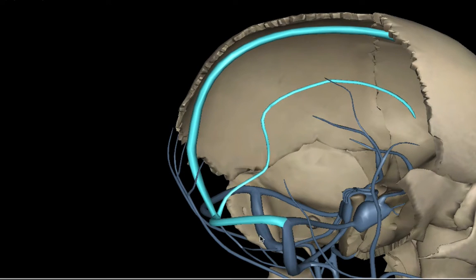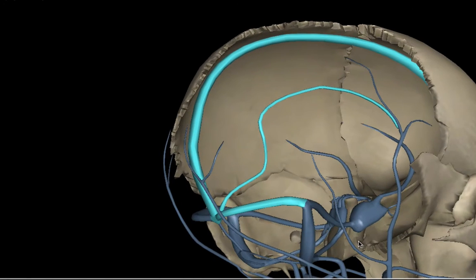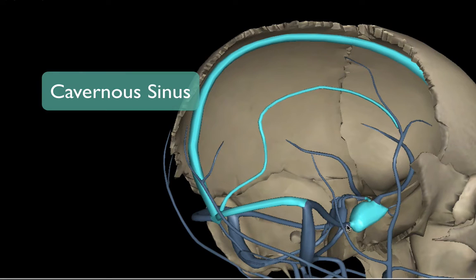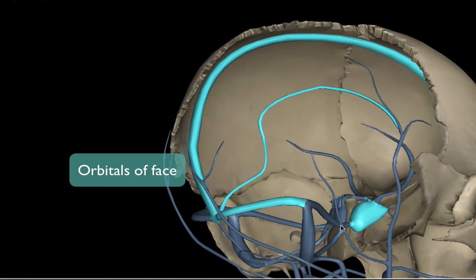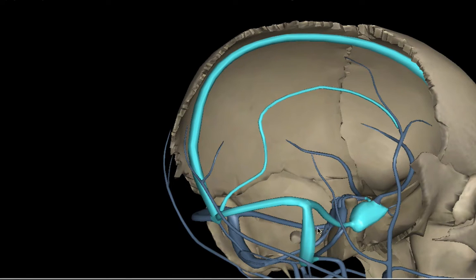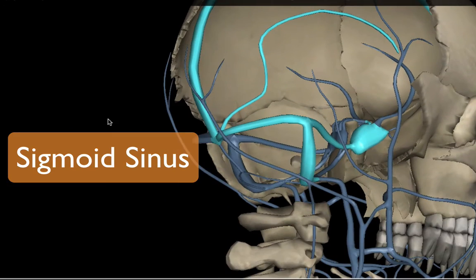Based on its location, you can guess that the transverse sinus drains the occipital portion of the brain. Taking a deeper look into the cranial cavity, we see the cavernous sinus, which drains the ophthalmic veins and the orbitals. They all come to meet and drain in the sigmoid sinus.